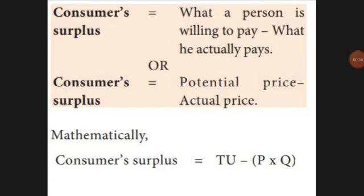You can also write it as potential price minus actual price. In mathematical form: total utility minus price into quantity.